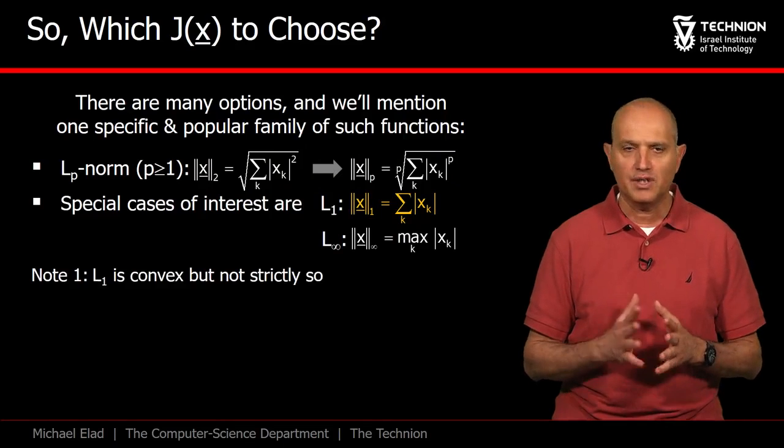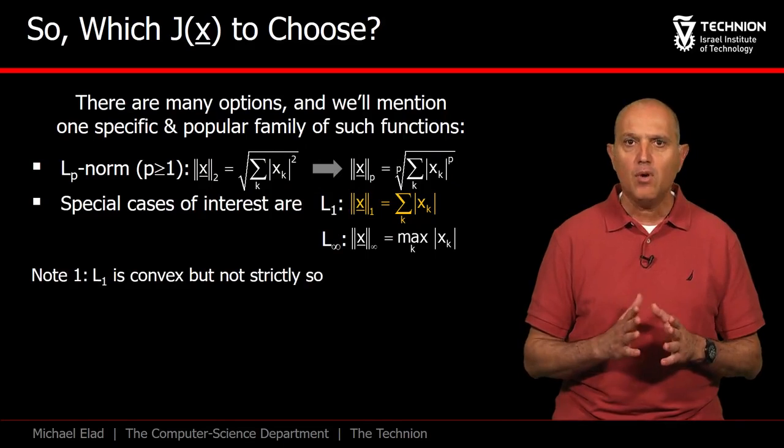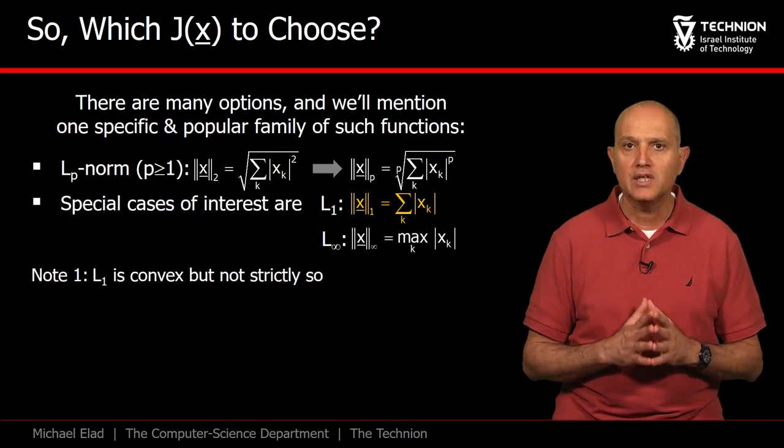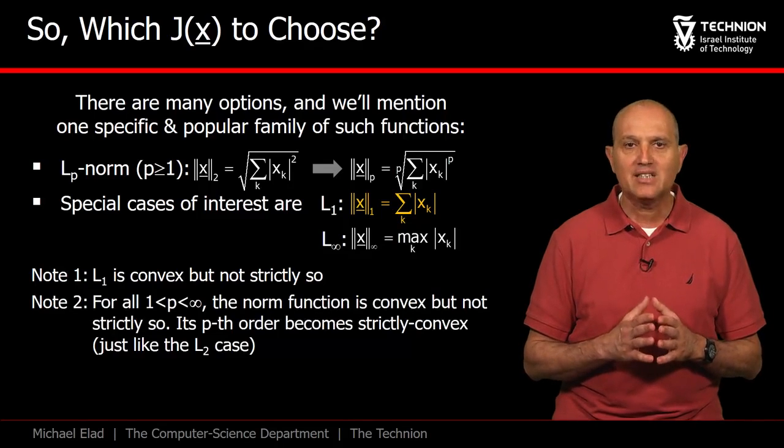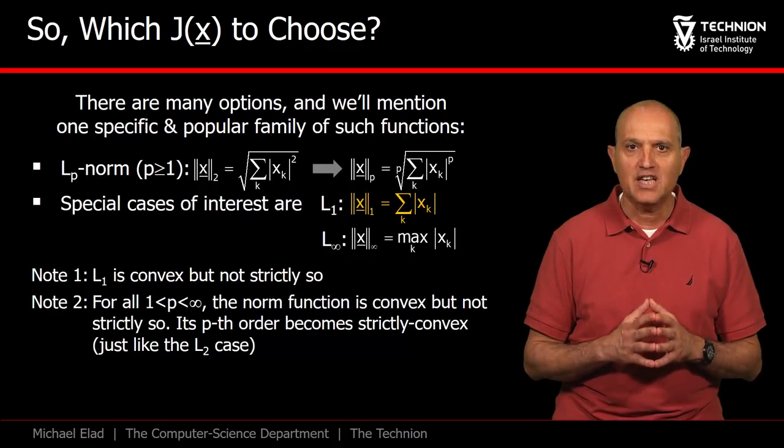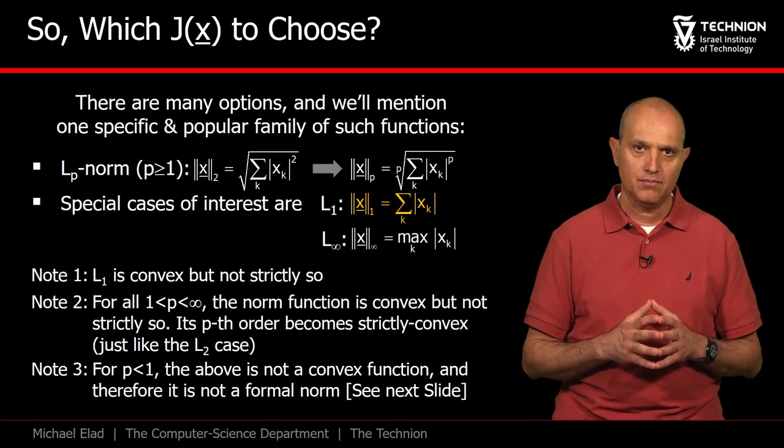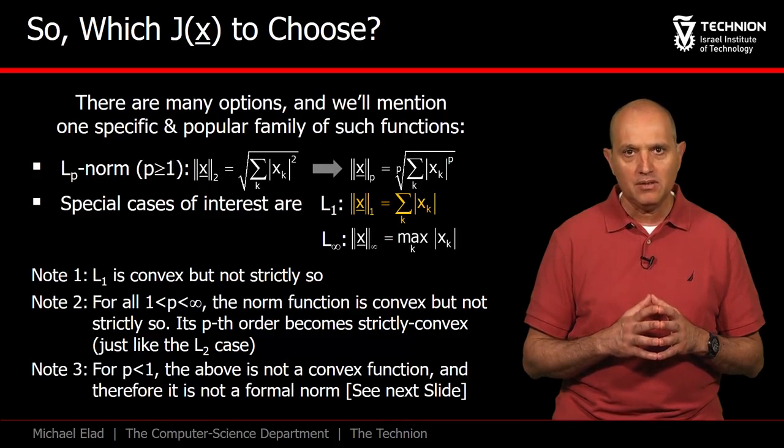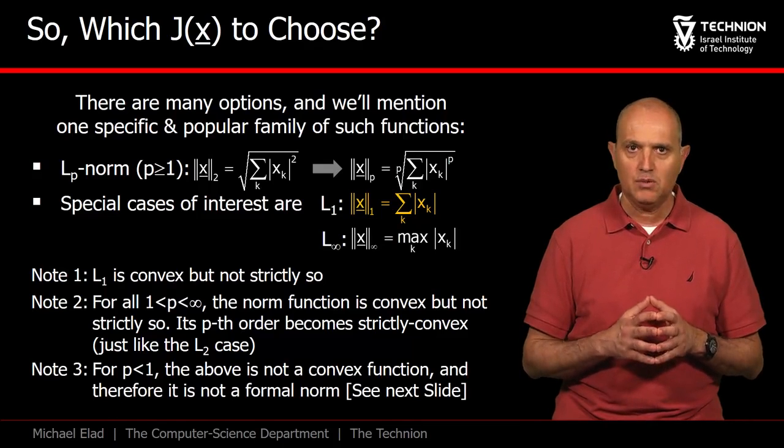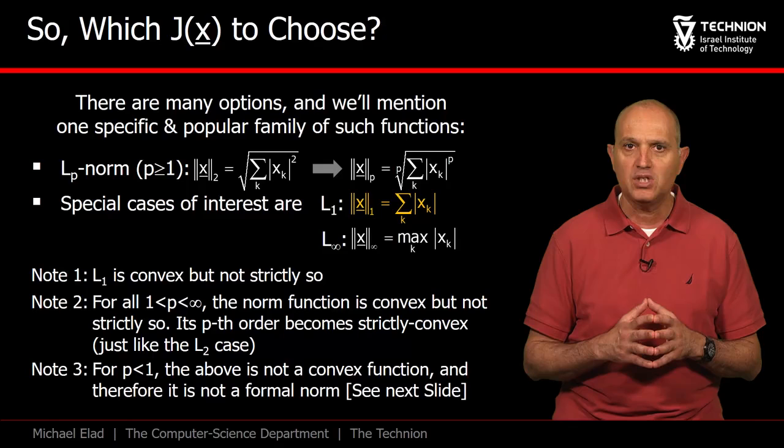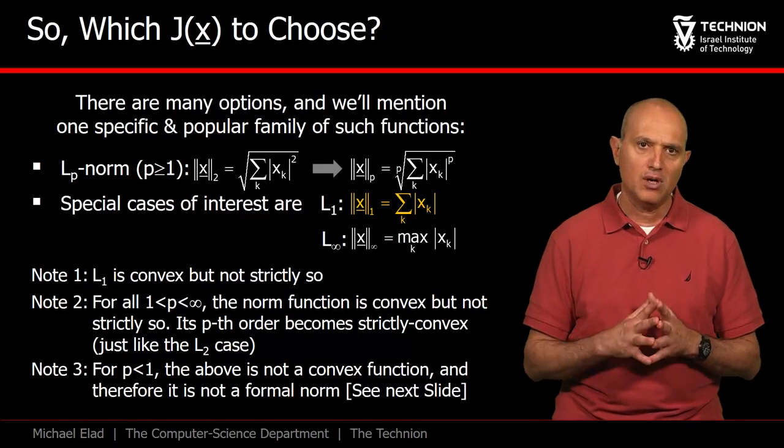Few comments are in order here. First, the L1 is indeed convex, as claimed, but not strictly so. Indeed, for all these norms, we do not get strict convexity unless we raise the expression by the pth power. One last comment: for p smaller than 1, this expression is not convex. As we show next, this implies that for p smaller than 1, this is not a formal norm.